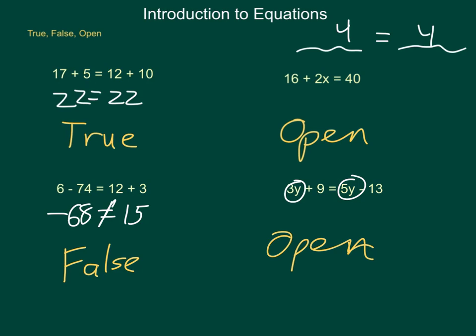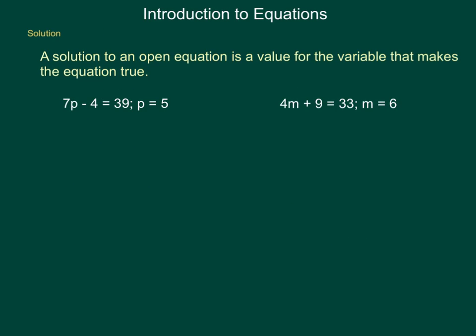So what can we do when we have equations as such, such as these open ones? This is when we start talking about the solution to an equation. A solution to an open equation is a value for the variable that makes the equation true. Here I have two different equations with an assumed value for our variable given on each one. Once you have a variable for your equation, you substitute it in and then simplify. Whenever I substitute a value for a variable into an equation, for instance here, p equals 5, every location that I see the variable p, I'm going to replace it with a 5.